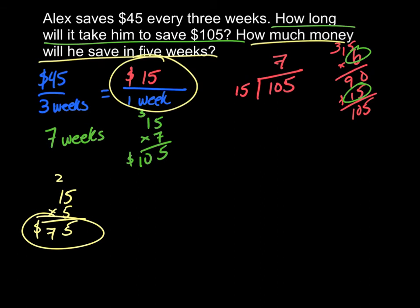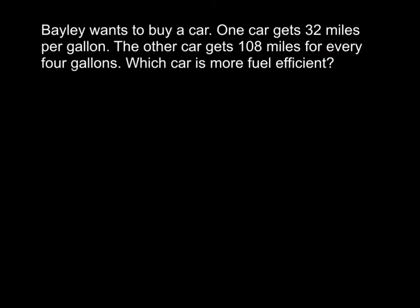Let's try one problem on your own. Bailey wants to buy a car. One car gets 32 miles per gallon, talking about gasoline. The other car gets 108 miles for every 4 gallons. Which car is more fuel efficient? Work through it on your own, and then I'll show you how I did it.